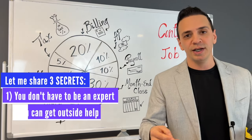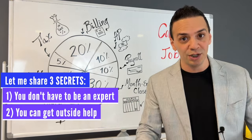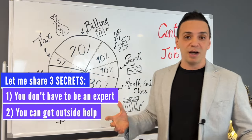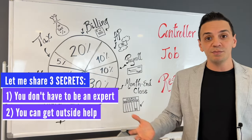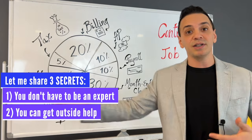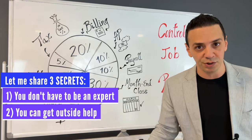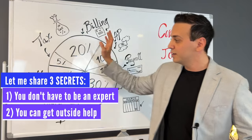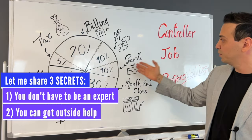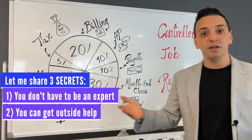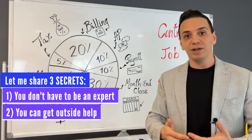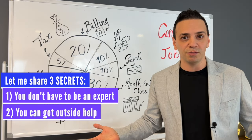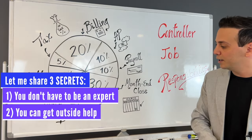Secret number two is that you can rely on outside help in many of these areas. For example, in tax, I'm not an expert, but I rely on an outside firm to help me prepare the tax return. For payroll, I work with ADP and rely on them directly for guidance. So you can rely on outside consulting help in some of these areas. That's secret number two.